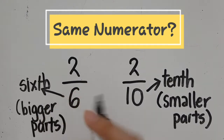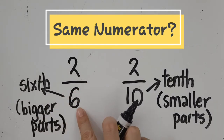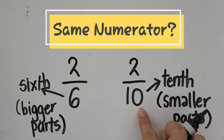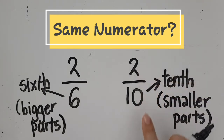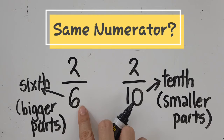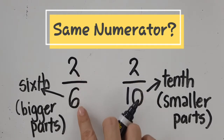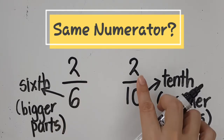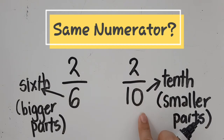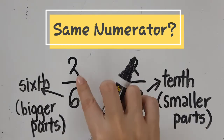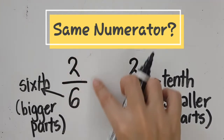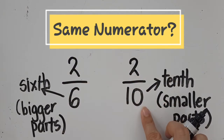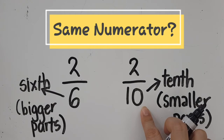Sixths are bigger than tenths. So if I have two pieces of tenths compared with two pieces of sixths, obviously two pieces of sixths will be bigger than two pieces of tenths. So two-sixths is the greater fraction, and two-tenths is the smaller fraction.